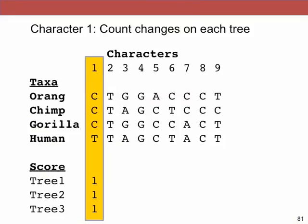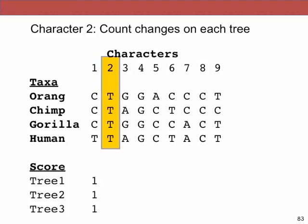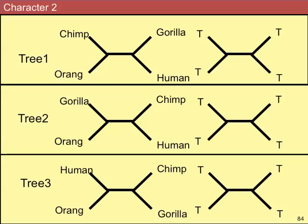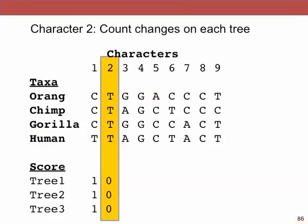Summing up for character one: tree one gets a score of one, tree two gets a score of one, tree three gets a score of one. We now move on to character two, where everything is T. The minimum number of character state changes for all three trees is zero — we don't need to hypothesize any changes if every taxon has the same character state. Each tree gets a score of zero for character two.